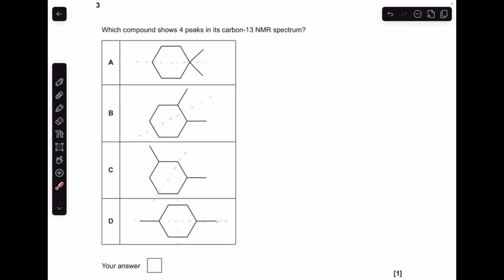So number three is a little bit like number one, where we're looking for lines of symmetry, so we can see if there's any equivalent environment, remember this one's about carbon. One, two, three, four, five, so it's not that one. Next one, one, two, three, four, so there's your answer there.